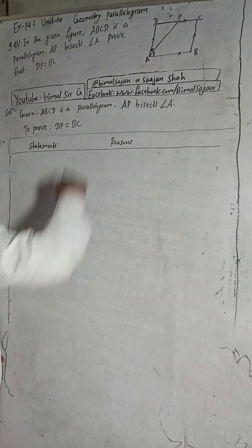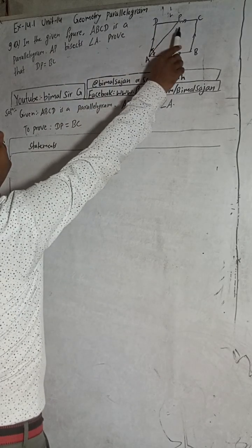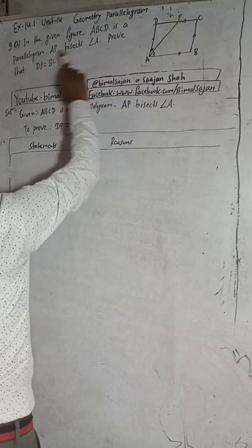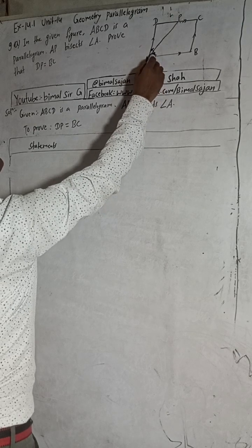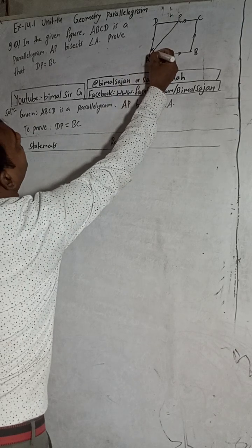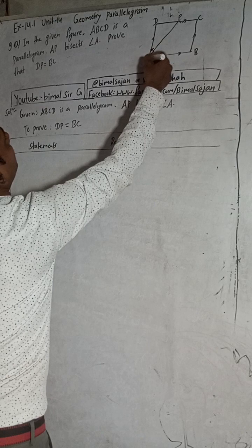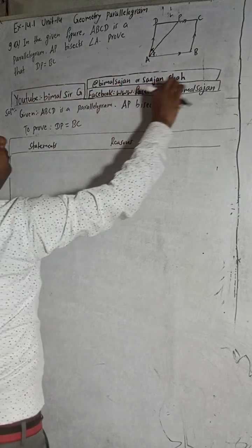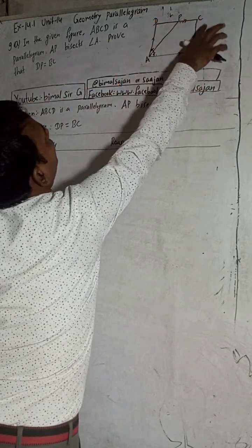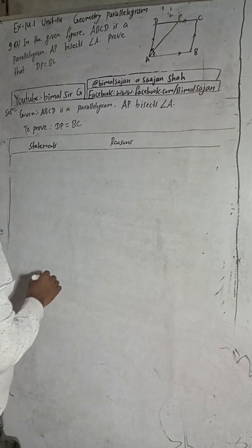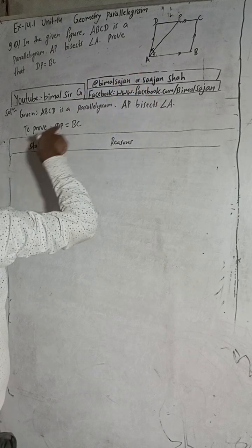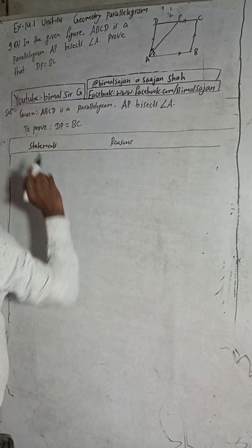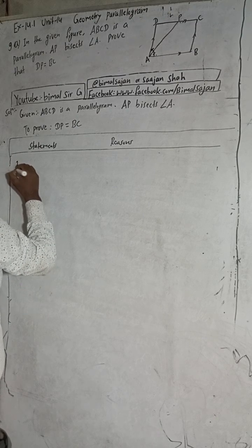The question is number 9: In the given figure, ABCD is a parallelogram. AP bisects angle A — meaning this angle is bisected, so this much angle equals this much angle. DB is equal to BC, and DB is equal to BC — I have to prove this. So: given that ABCD is a parallelogram, AP bisects angle A, and to prove: DP is equal to BC.